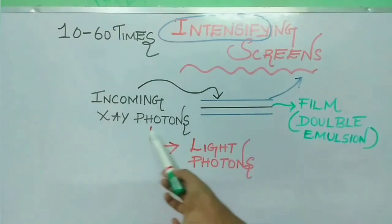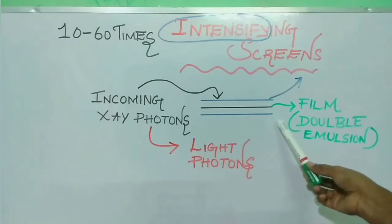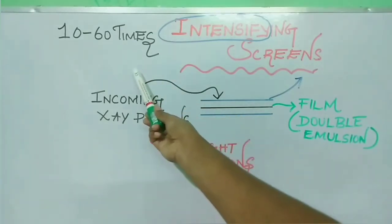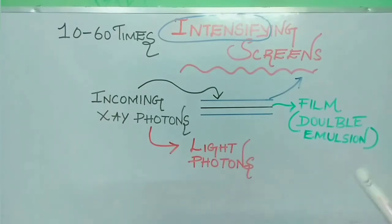They absorb incoming x-ray photons and re-emit this incoming x-ray energy in the form of light photons with the help of phosphor crystals in the intensifying screen. The amount of x-ray energy absorbed is directly proportional to the amount of x-ray energy to which the screen is subjected. So we are combining intensifying screens on either side of the film.